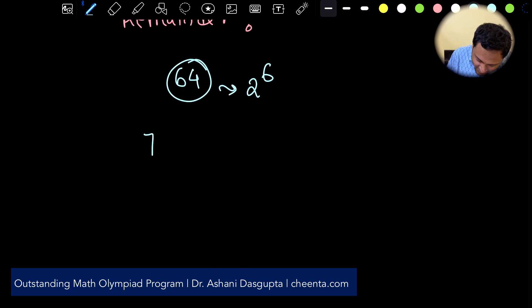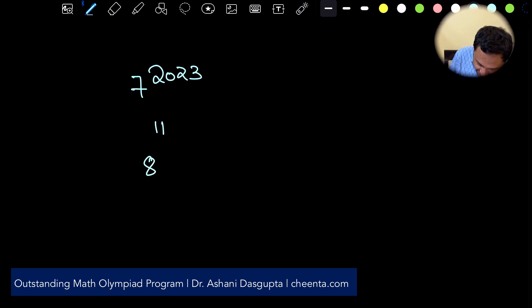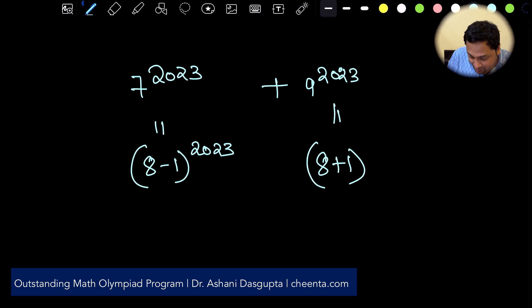7 is simply 8 minus 1 and 9 is simply 8 plus 1. Now this is not an accident. We will leverage this particular point to solve this problem. So let's try that. So instead of 7 to the power 2023 let's write 8 minus 1 raised to the power 2023. Similarly instead of 9 to the power 2023 let's write 8 plus 1 raised to the power 2023. And we want to divide this entire thing by 64.